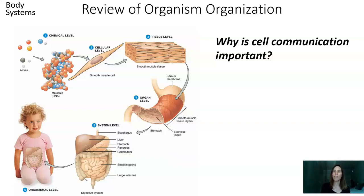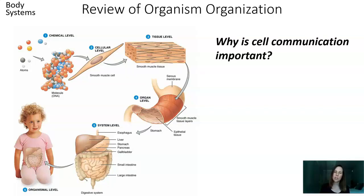Let's review how organisms are organized. In this diagram, at the very smallest level we have atoms — that's the chemical level. Those atoms get organized into larger units called molecules, and the example here is DNA. That DNA, along with many other molecules, makes up a cell — in this case a smooth muscle cell. That smooth muscle cell is part of smooth muscle tissue, and that tissue is part of an organ. An organ is made up of many tissues, which are made up of many cells, which are made up of many chemicals.